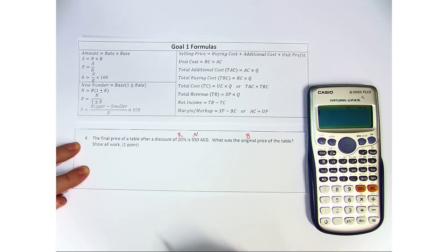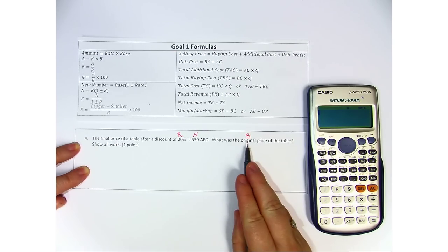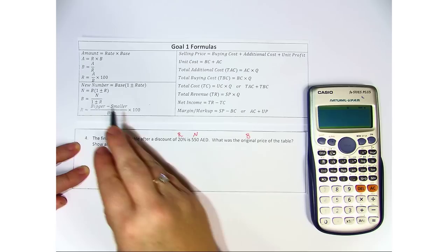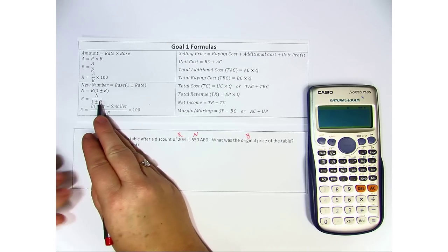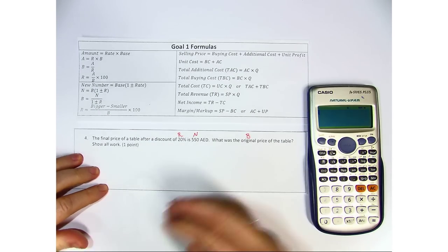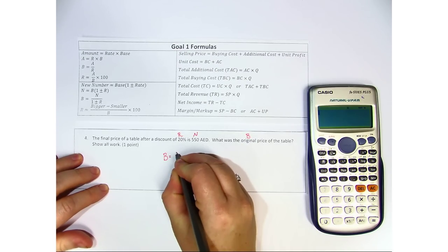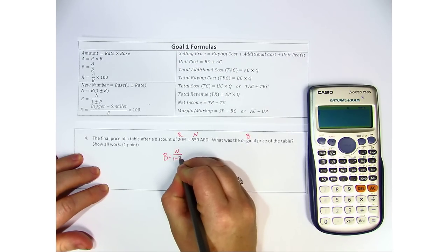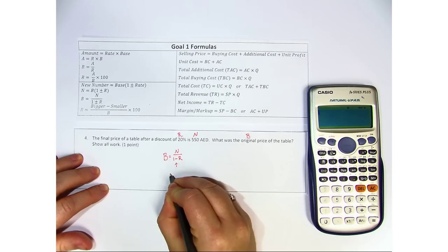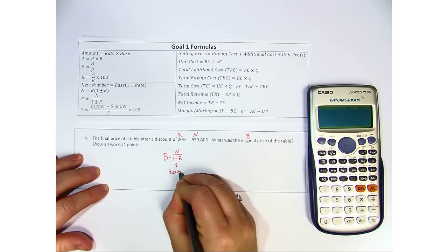We need to show all work. So we're looking for B, and the formula we have for B is N over 1 plus or minus the rate. In this case, it's a discount. So the formula we're going to look at is B equals N over 1 minus our rate, and the reason that it's minus is because of the discount.